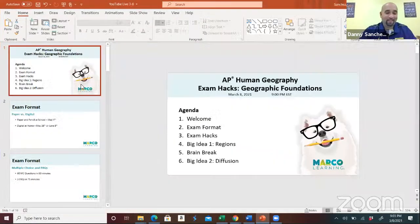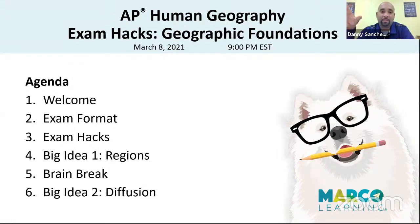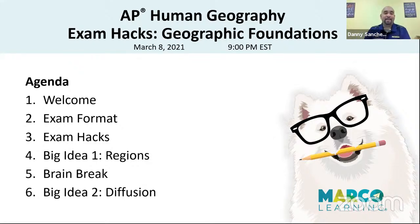Walk us through how to figure out the wonderful world of human geography. Thank you very much. I'm going to give a quick little agenda here. Exam format, exam hacks. Big idea one is going to be regions, and also a brain break. I think we might even meet the CEO of Marco Learning today. And the second big idea, which is diffusion. As I go through this, it's not going to be just content. I want to also relate it to how these types of questions can be portrayed on the AP exam.